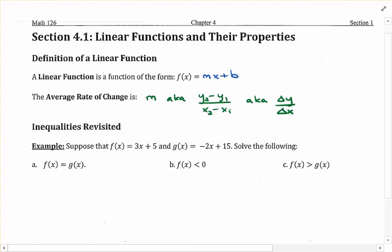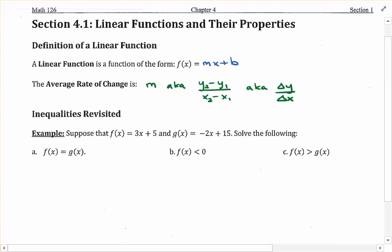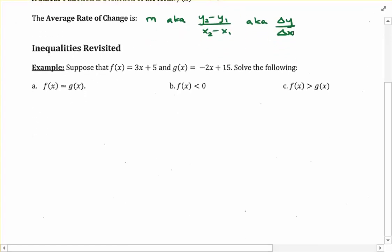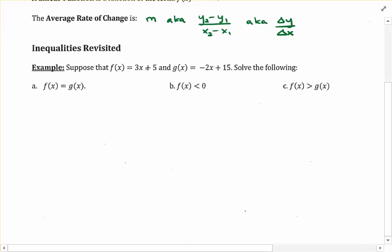Let's move on to our first example, where we're going to be working with an equation and two inequalities. We're incorporating some function notation here, and the functions we're using are both linear functions. For instance, f of x is defined as 3x plus 5, which is in the format mx plus b, so f of x is a linear function.